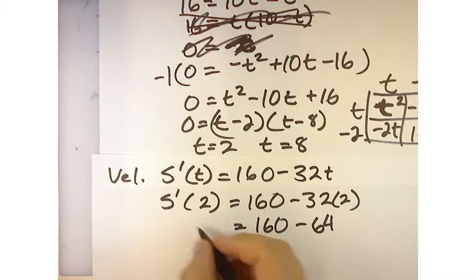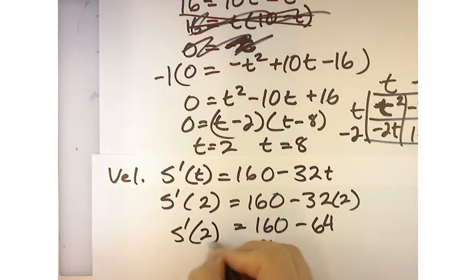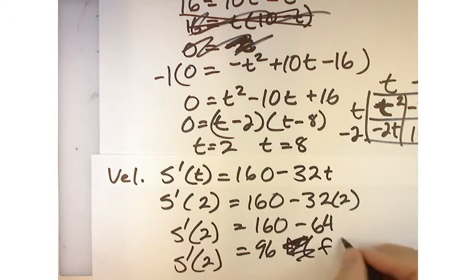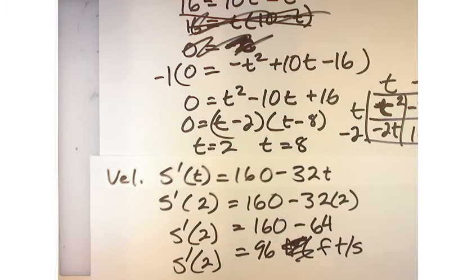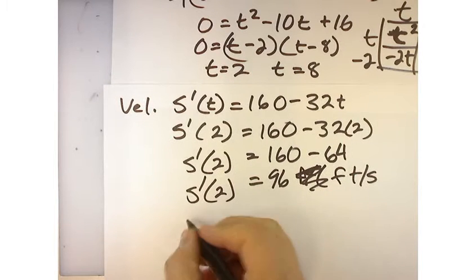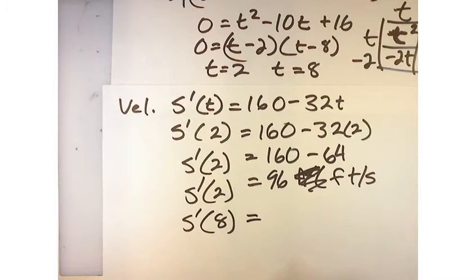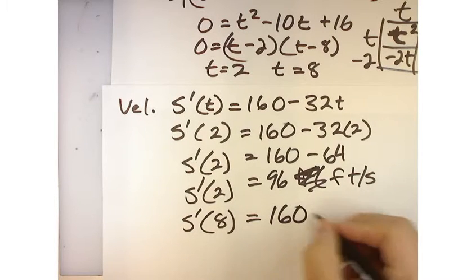So, now what did I just figure out? What does the 96 represent? 96 feet per second. Now, that's on the way up. Anybody want to take a stab at what they think it will be the speed on the way down? Negative 96.